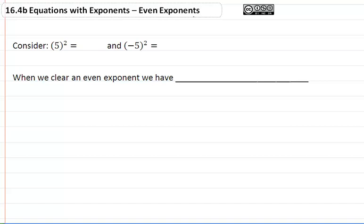16.4b equations with exponents, even exponents. Consider 5 squared equals 25 and that negative 5 squared also equals 25.